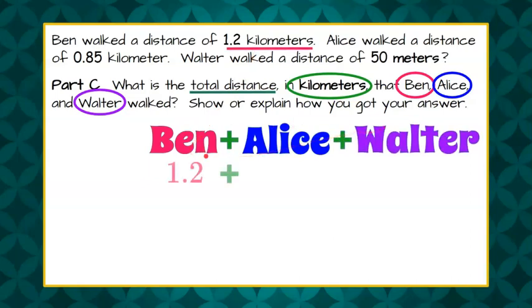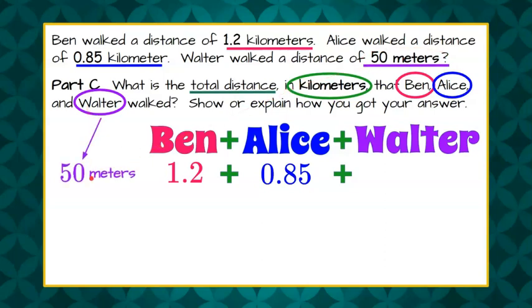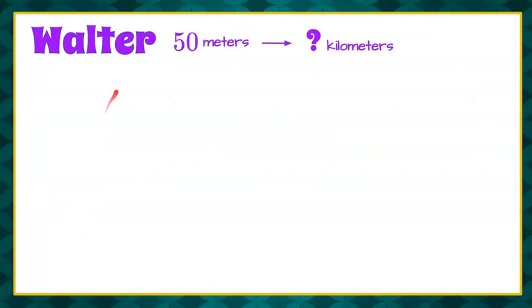So Ben walked 1.2 kilometers. Alice walked 85 hundredths of a kilometer. And Walter, uh-oh, his is given in meters. So we need to take our meters and convert it to kilometers for Walter. So when we do meters, we're going to kilometers. So let's take a break from this and go back and look at this. We're going to take Walter's 50 meters and we need to convert it to kilometers.